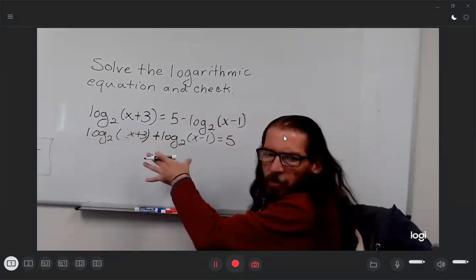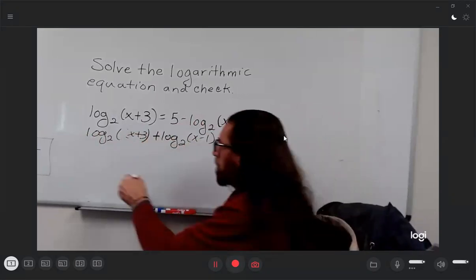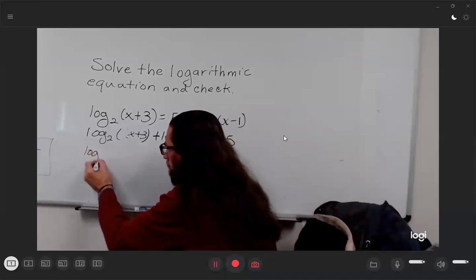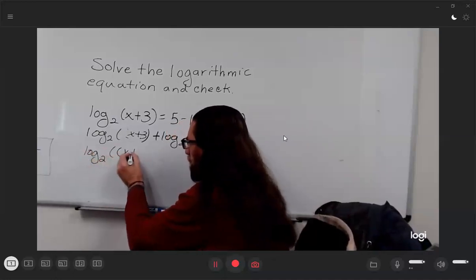The (x+3) and the (x-1) will be multiplied together inside of a single logarithm with base 2.